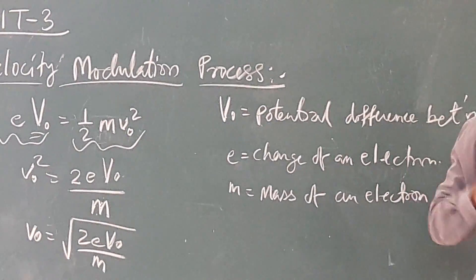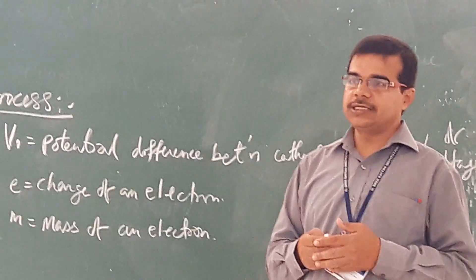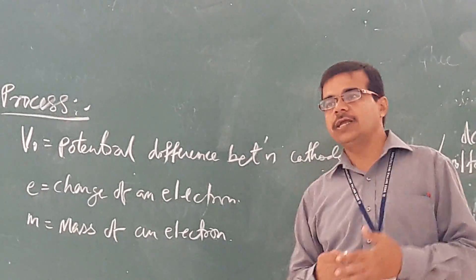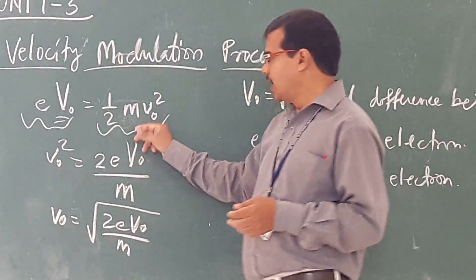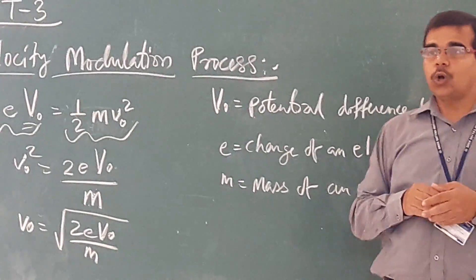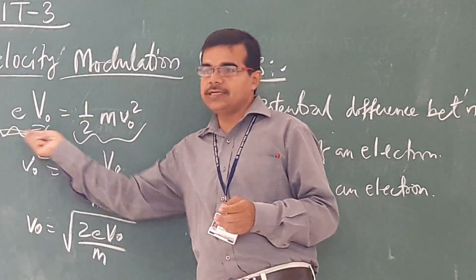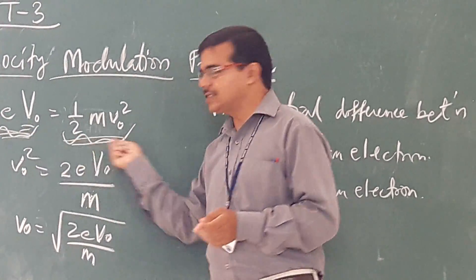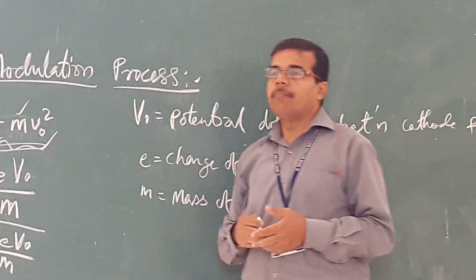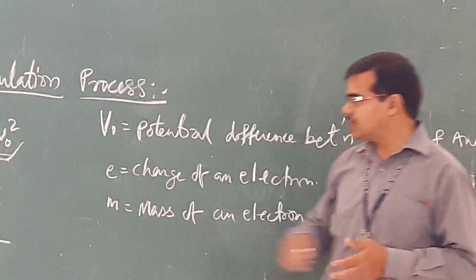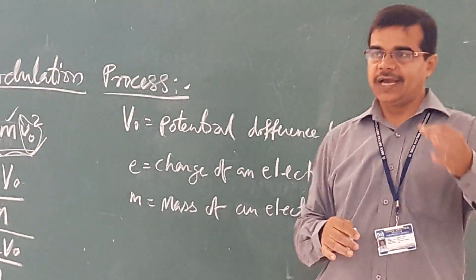When the electron is moving from the cathode towards the buncher cavity, this is the kinetic energy. When the electron is at rest, it possesses potential energy, and when it is in motion, it possesses kinetic energy. Energy remains the same whether it is in the form of potential energy or kinetic energy. Here, m is the mass of the electron.